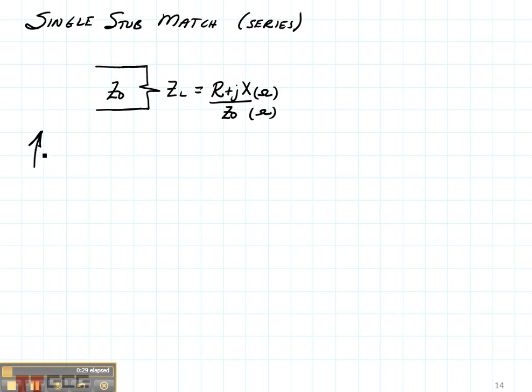So we want our ultimate input impedance to equal z0 so that the reflection coefficient will be equal to 0. If we normalize that, that's going to be 1 plus j0, and if we normalize this, it's going to be r plus jx.